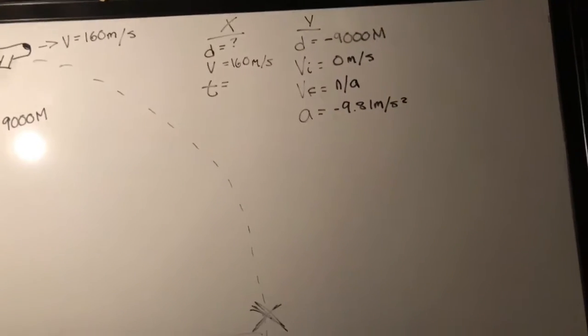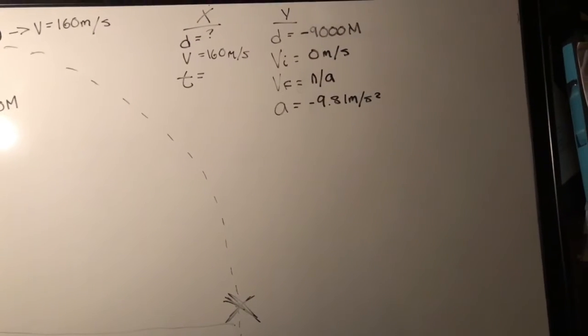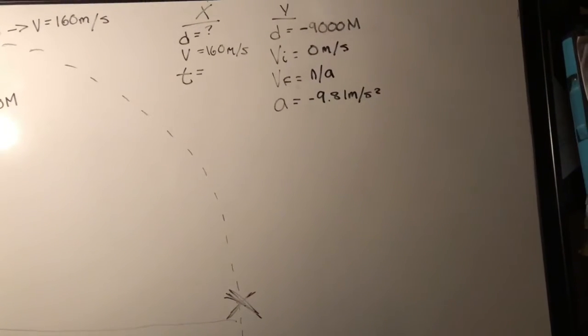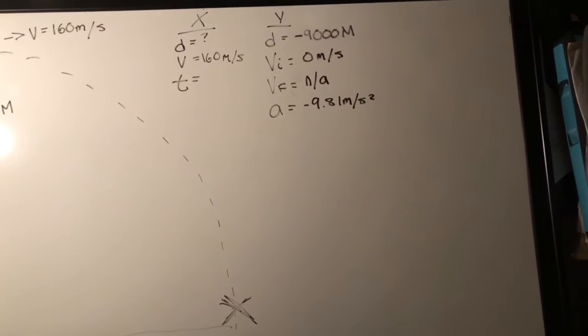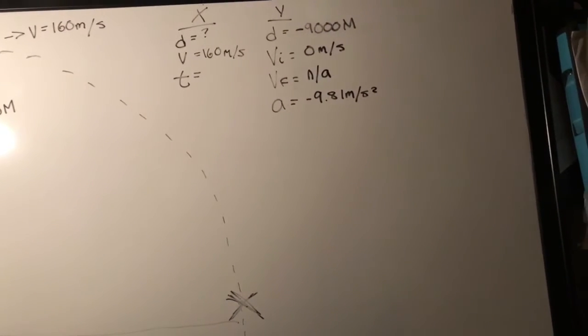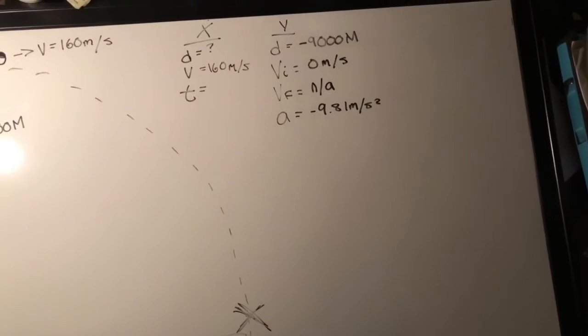The initial velocity, which is 0 meters per second. The final velocity, which we do not need to find out our time. And the acceleration, which is gravity, which is negative 9.81 meters per second squared.